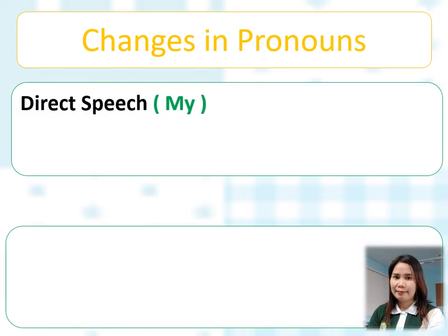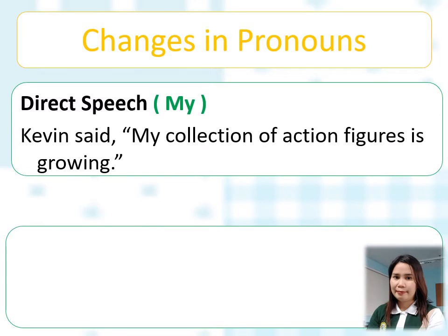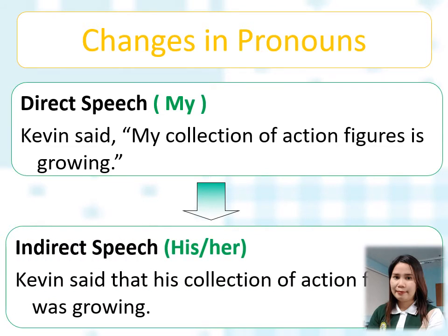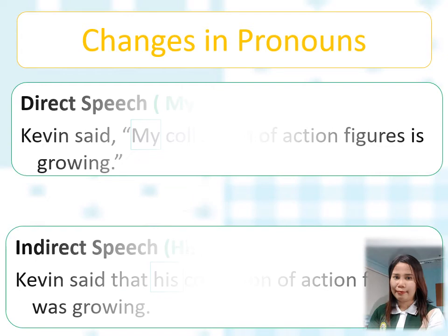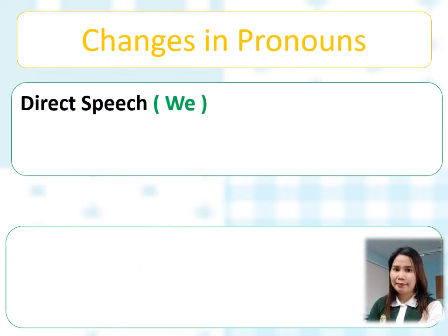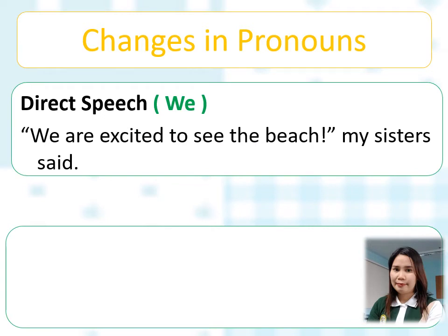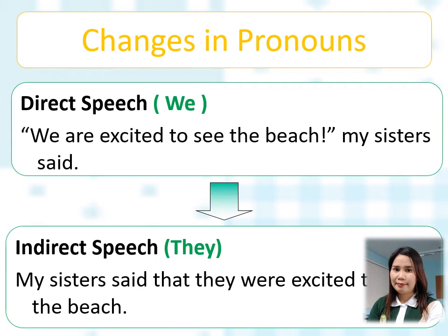Another example is the pronoun my. Kevin said, "My collection of action figures is growing." When we convert it into reported speech, we change my, so it becomes: Kevin said that his collection of action figures was growing. From my, we change it to his because of Kevin. Another example uses the pronoun we: "We are excited to see the beach," my sisters said. It becomes: My sisters said that they were excited to see the beach. The pronoun we becomes they in reported speech.